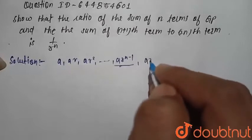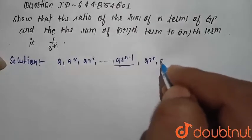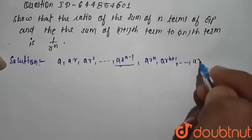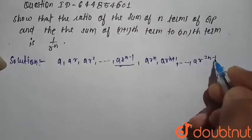Now after that, ar raise to power n, and ar raise to power n plus 1, and so on till ar raise to power 2n minus 1.